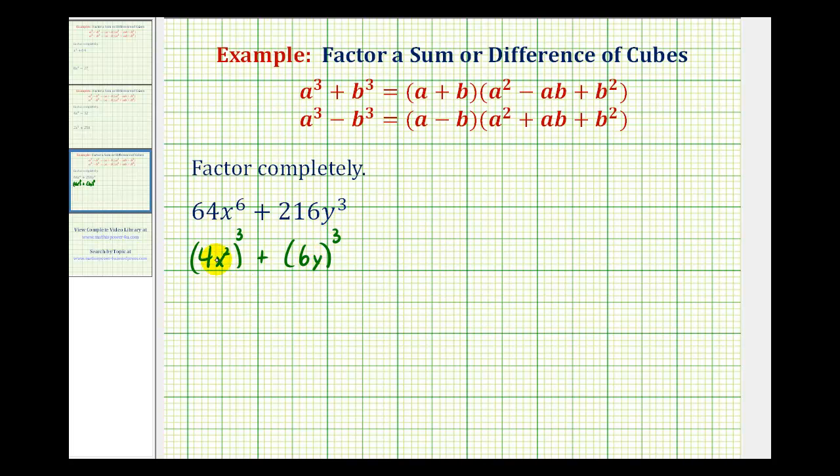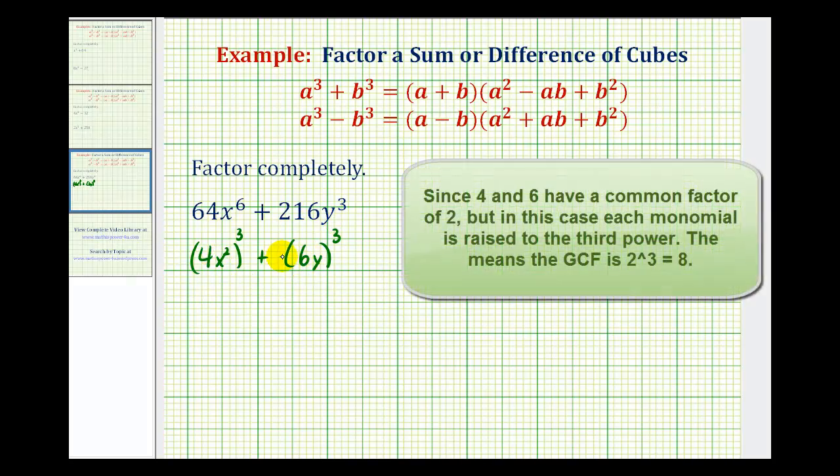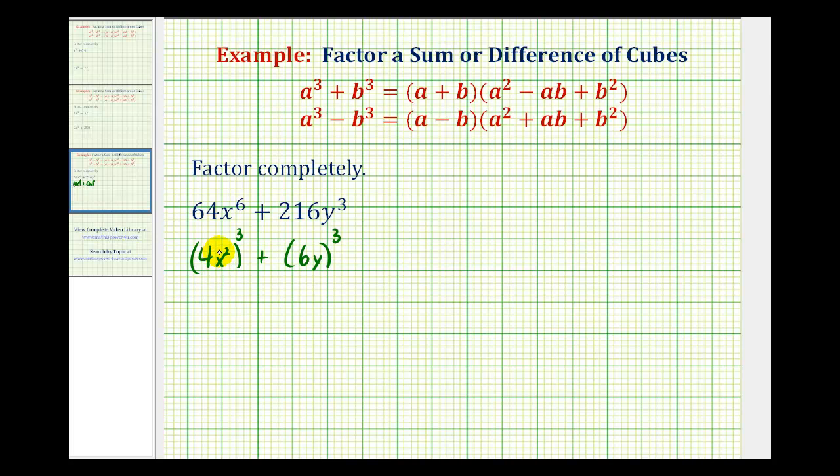However, this would be a mistake. Notice that 4 and 6 do share a common factor of 2, so we skip the first step in factoring, which is to factor out the greatest common factor of our binomial. It's important that we don't forget this first step, because if we factored this binomial using the sum of cubes formula with the binomial written in this form, it would not be factored correctly.